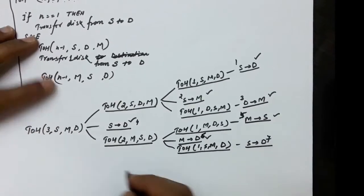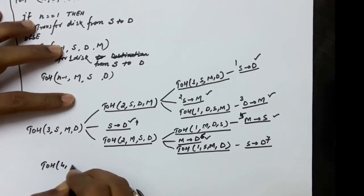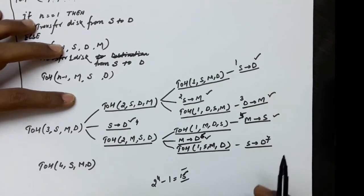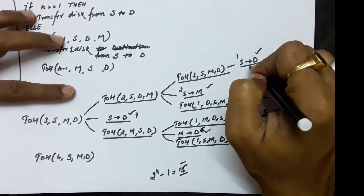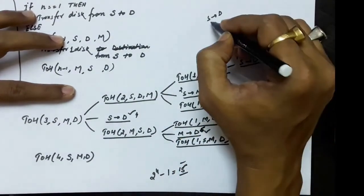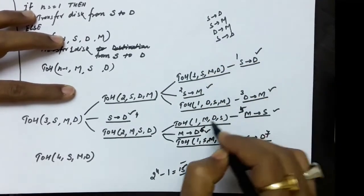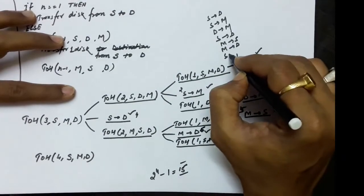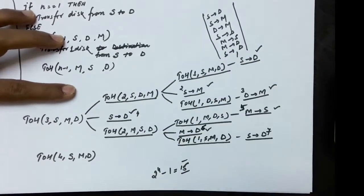You can write a similar question for four disks — in various university examinations this is asked. Draw the recursion tree for Towers of Hanoi with four disks (source, mediator, destination), which will require 2^4 - 1 = 15 shifts. The first step is S to D, next is S to M, next is D to M, next is S to D, next is M to S, next is M to D, and finally S to D — this is the final sequence of steps for the Towers of Hanoi problem.